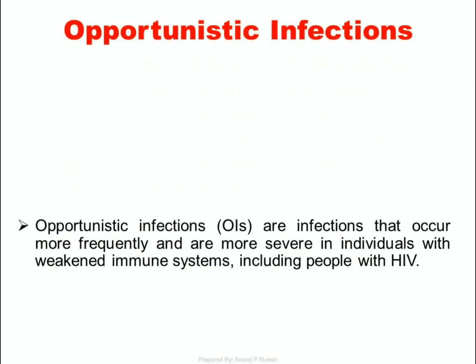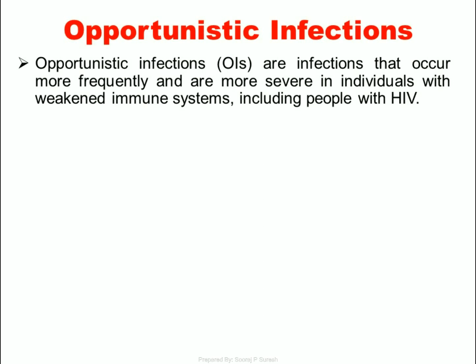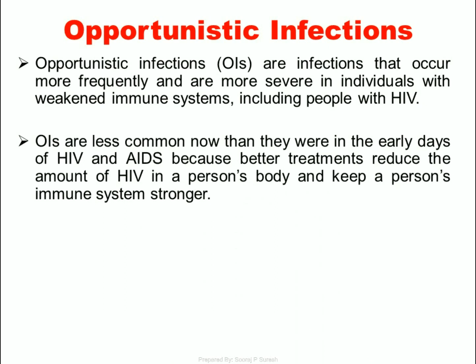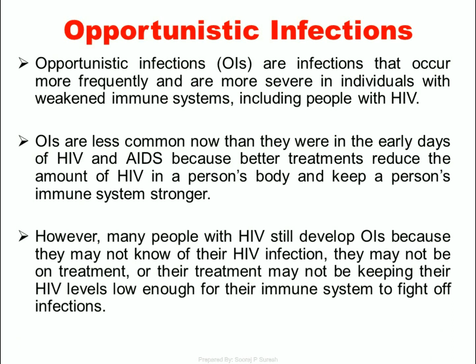Opportunistic infections (OIs) are infections that occur more frequently and are more severe in individuals with weakened immune systems, including people with HIV. OIs are less common now than in the early days of HIV and AIDS because better treatments reduce the amount of HIV in a person's body and keep the immune system stronger. However, many people with HIV still develop OIs because they may not know of their HIV infection, may not be on treatment, or their treatment may not be keeping HIV levels low enough for their immune system to fight off infections.